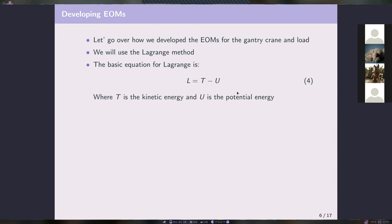We're going to start from the Lagrange equation: L = T − U, where T is kinetic energy and U is potential energy. In our FBD we have big mass M at the top — that's our cart — and then the length of our crane connected to the load, which is lowercase m. The applied force will cause rotation of the load.